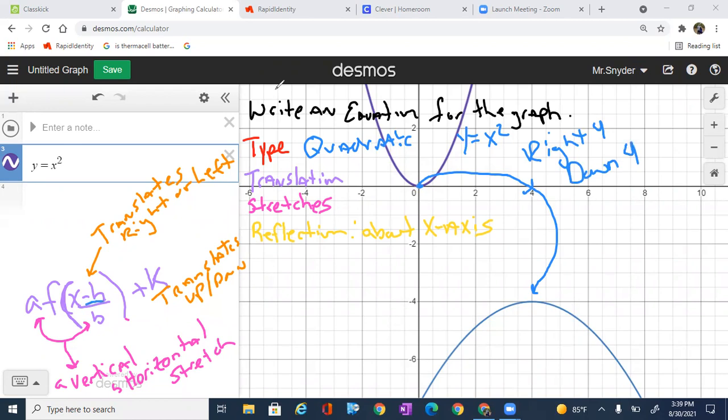Well, how do we write that in there? That is the x minus h and the plus k. So if I take y equals x squared, to get it to move right, I just simply say y equals x minus h, so minus 4 squared, and then down, so plus negative 4 or just minus 4.